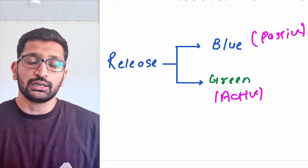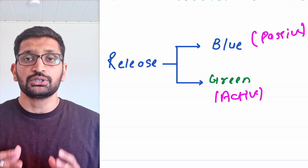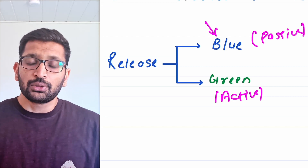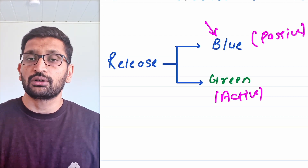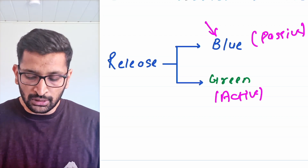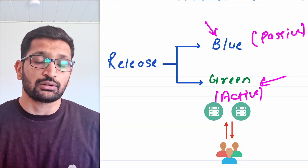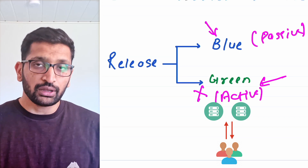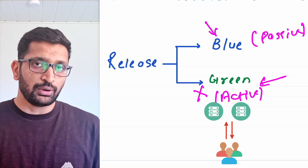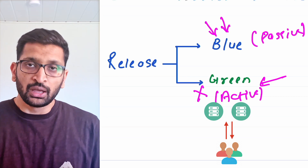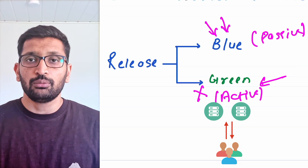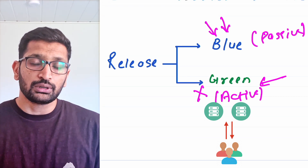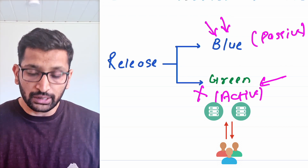Whenever you are doing a release, you perform the production release on the blue category of servers because those servers are not serving actual client requests, while the green category servers are actively serving client requests. So you stay away from the green side during the production release — you just do the deployment and release on the blue category of servers. Once deployment on blue is done, you decommission or cut off traffic from the green side of the server.